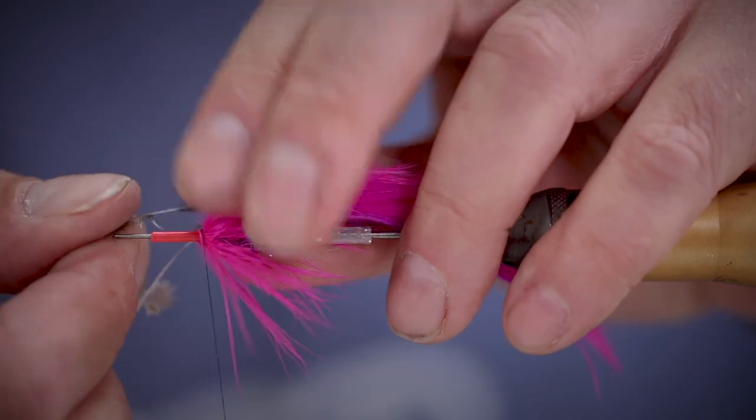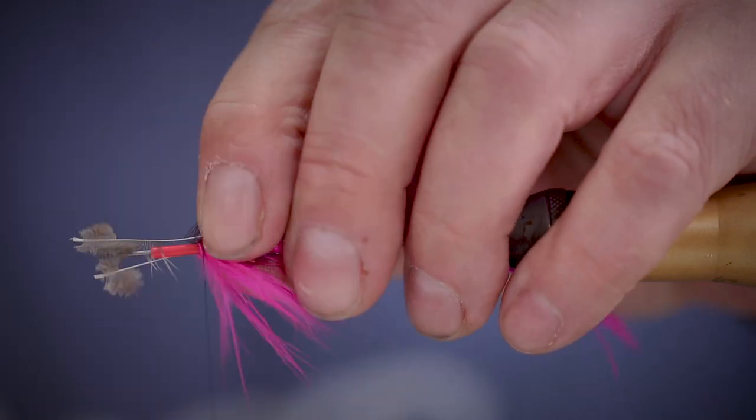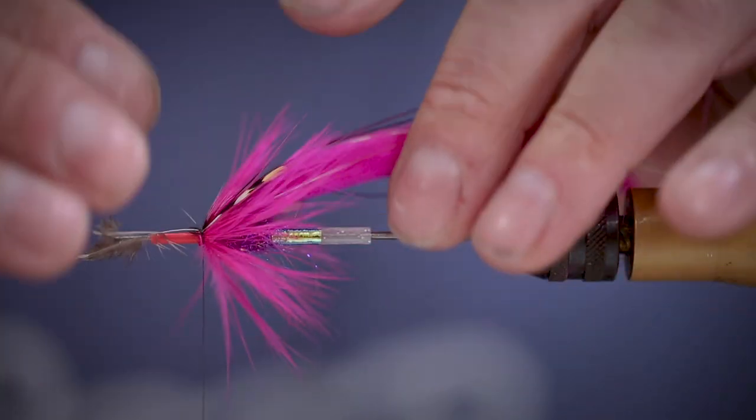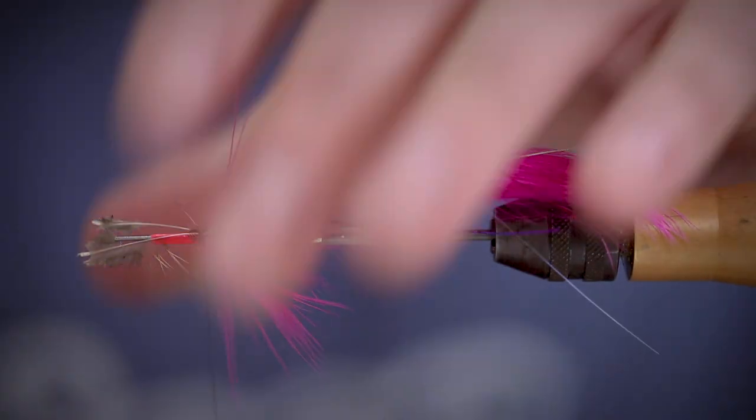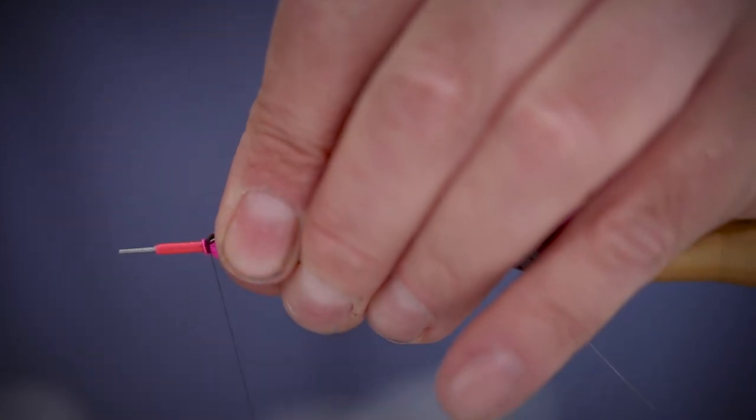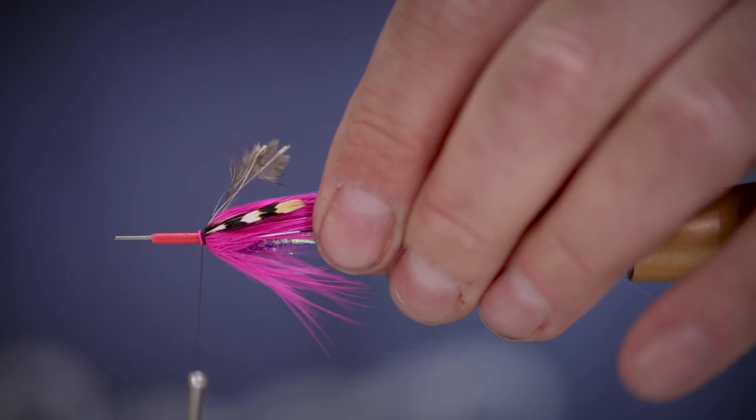If you're unhappy with the way they sit, just unwrap them and tie them back in again. Folding back the stems just to make sure that they're extra secure and trim away the waste.